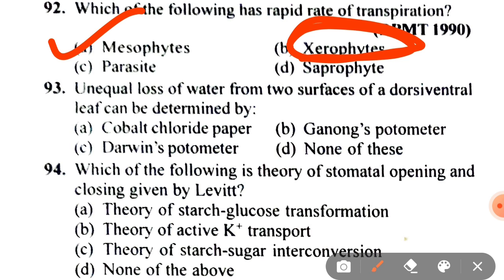Next: unequal loss of water from two surfaces of a dorsiventral leaf can be determined by A. Cobalt chloride paper, B. Ganong's potometer, C. Darwin's potometer, D. None of these. The correct answer is A — cobalt chloride paper.